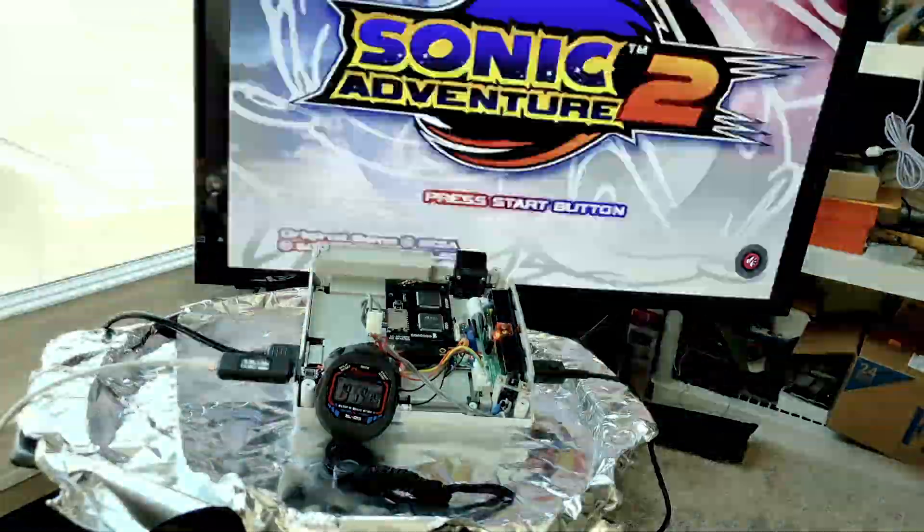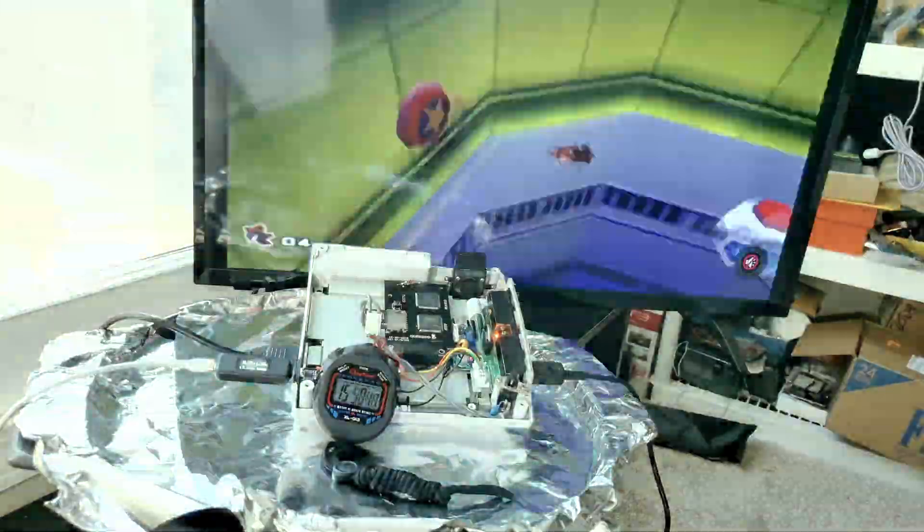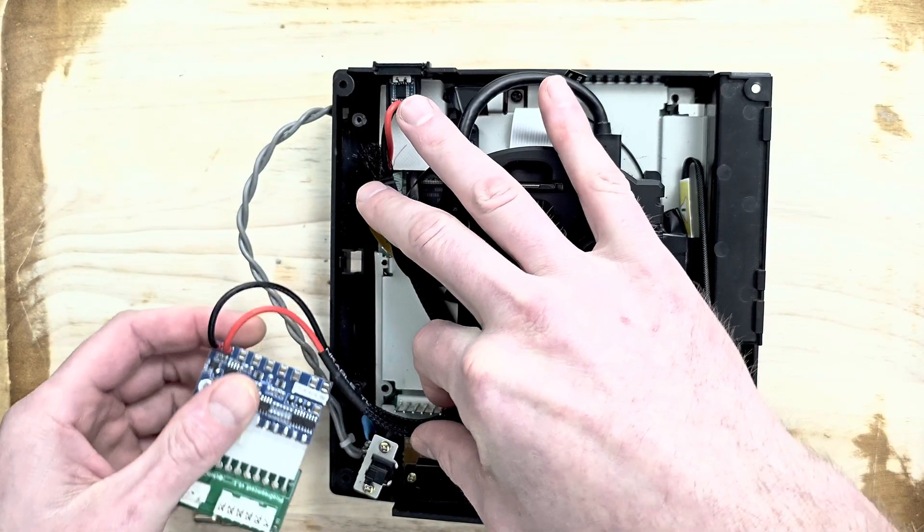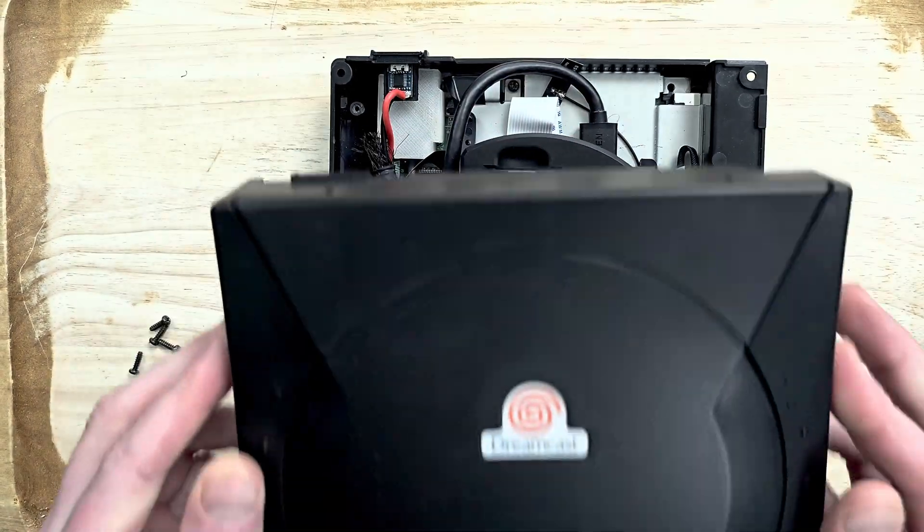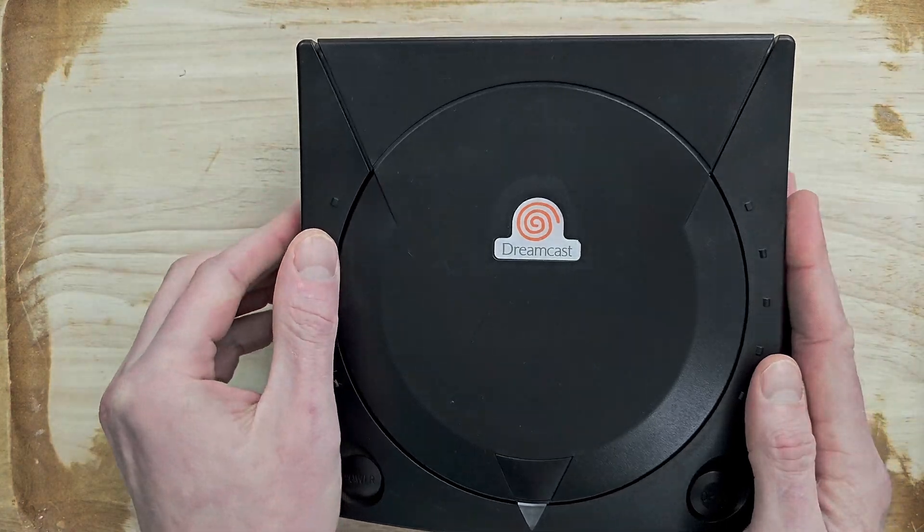Unsurprisingly the Dreamcast ran this power setup like a champ. Since I didn't have an extra 5 amp buck converter at the end of this trial, I'll be putting the Pico PSU back in place until it arrives. And that about does it for this video. If you're curious how I fit a traditional HDMI port into the Dreamcast you can watch that video right over here. Otherwise if you like this video or if you have any questions or comments, go ahead and leave it down below. And as always, I'll see you next time.